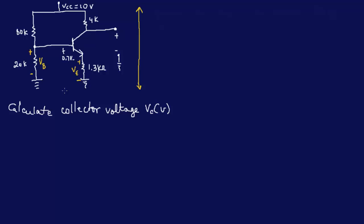Your VCC is your total voltage — the whole thing from top to ground, which is 10 volts as given. Your collector voltage VC is only from the collector node down to ground. You can see that the voltage across the collector resistor plus your collector voltage VC equals your total VCC.